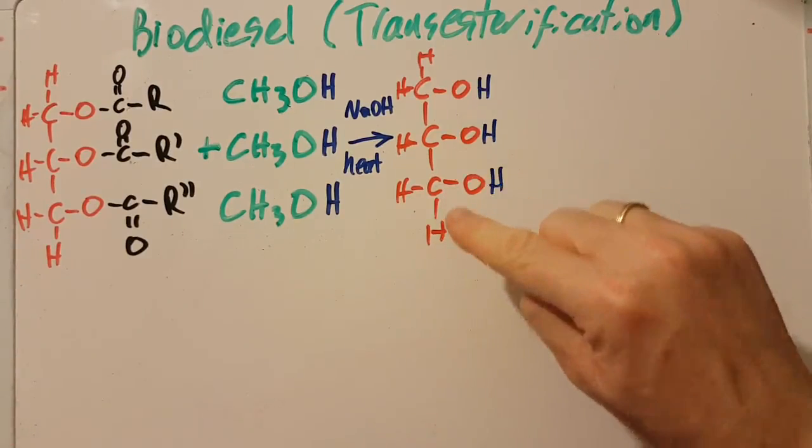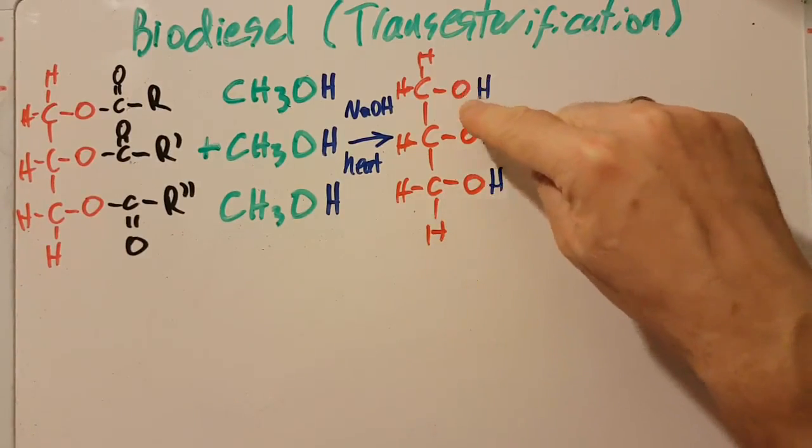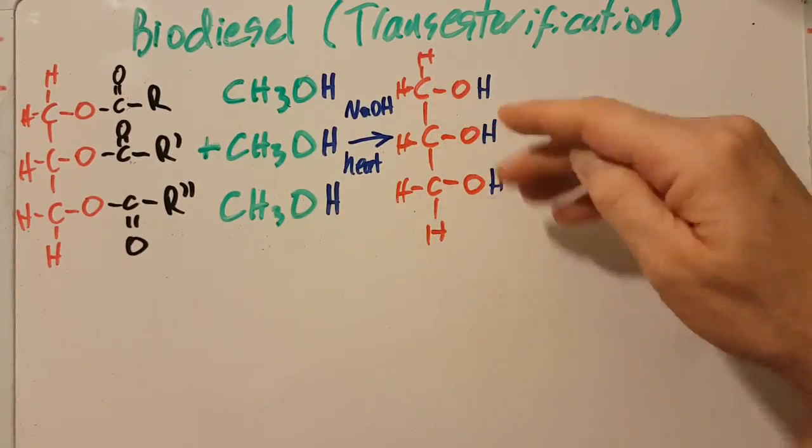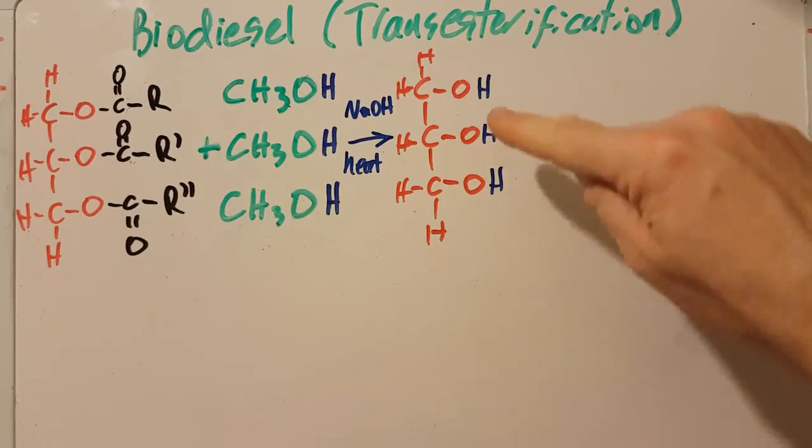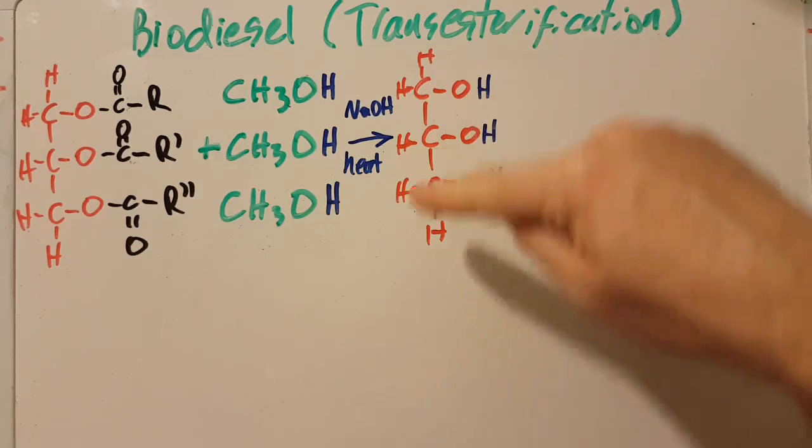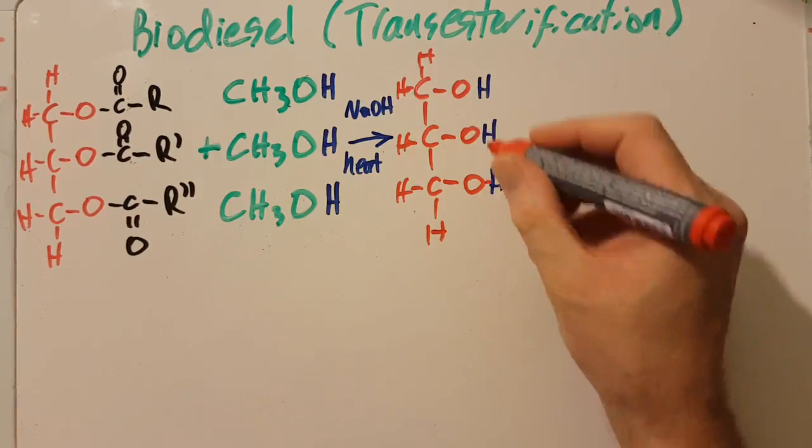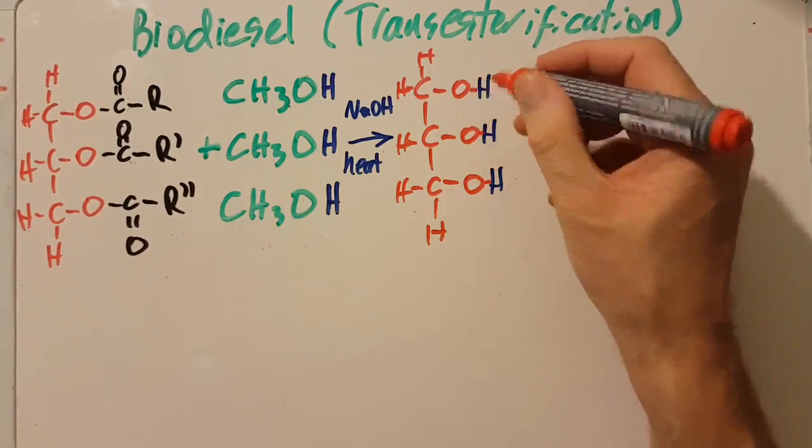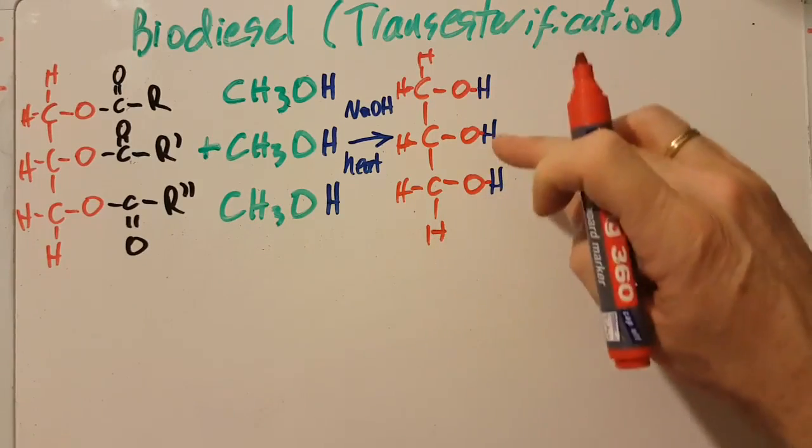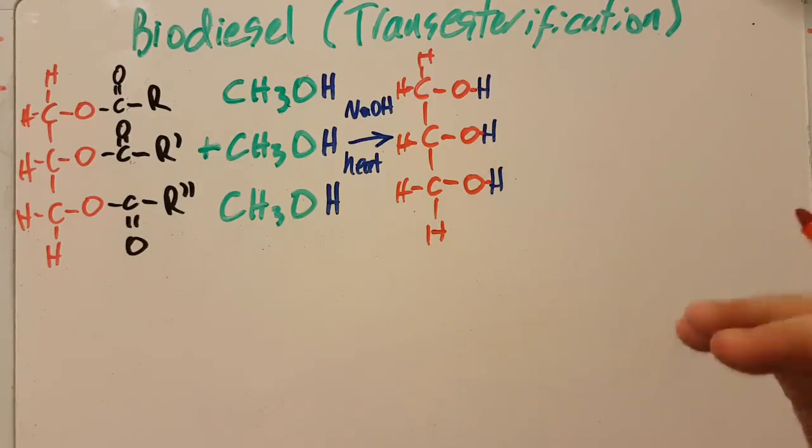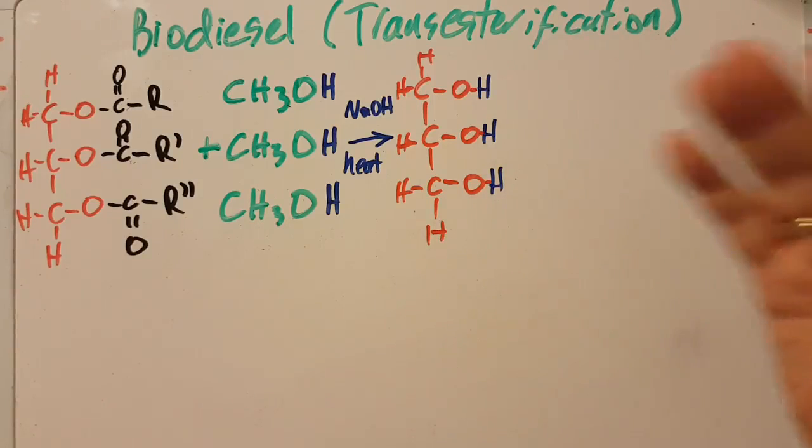So this first product is propane-1,2,3-triol. They might ask you about the viscosity of this, and it's highly viscous because it has room for three hydrogen bonds there. Now don't be fooled, this isn't the hydrogen bond, this is a covalent bond. That's an intramolecular bond. The hydrogen bonds that give this high viscosity are actually intermolecular bonds between one molecule and another.